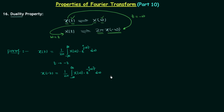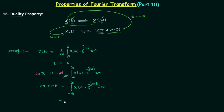After this we will multiply 2π on both sides. So we have 2π·x(−t) on the left-hand side, and on the right-hand side this 2π and 1/2π cancel out, giving us the integration from minus infinity to infinity of X(ω)·e^(−jωt) dω. Now we will interchange the variables t and ω — replacing t by ω and ω by t.